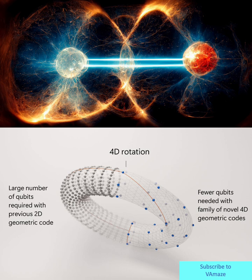On the left, a dense arrangement of gray spheres represents the large number of qubits required with previous 2D geometric codes to protect fragile quantum information.